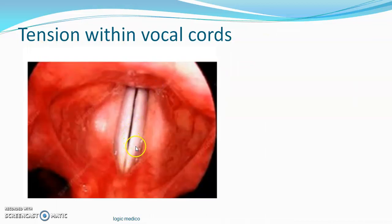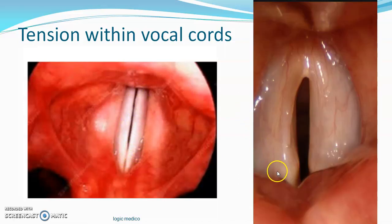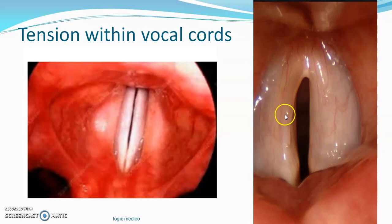Just observe this carefully — you can see the tension within the vocal cords here. Here you can see it's not that much tensed; if you observe carefully there is wrinkling in the vocal cord. Here it is tensed. So the tension within the vocal cord can be altered — either it can act as a tensor of the vocal cord or a relaxer of the vocal cord. This helps in voice modulation.